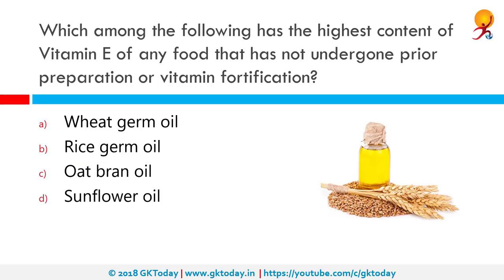Which among the following has the highest content of vitamin E of any food that has not undergone prior preparation or vitamin fortification? The correct answer is wheat germ oil. Wheat germ oil is a great source of vitamin E and is said to be a powerful antioxidant.